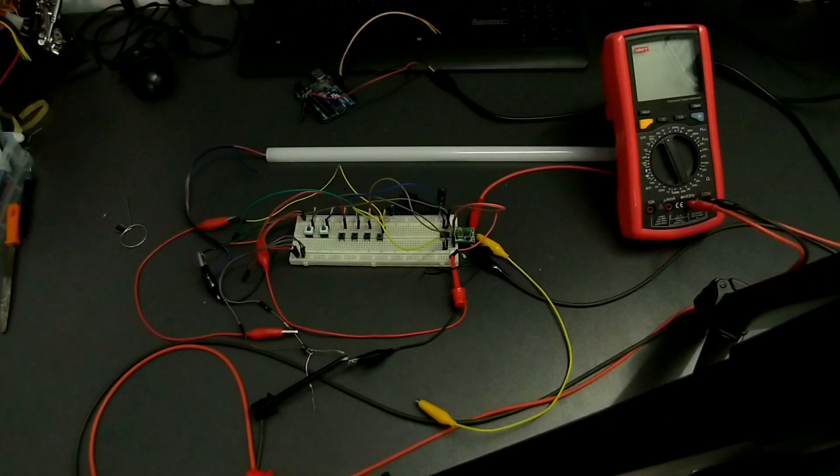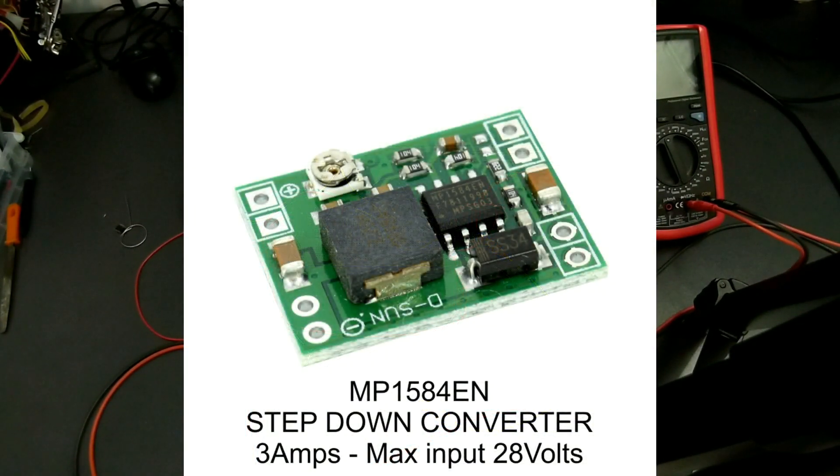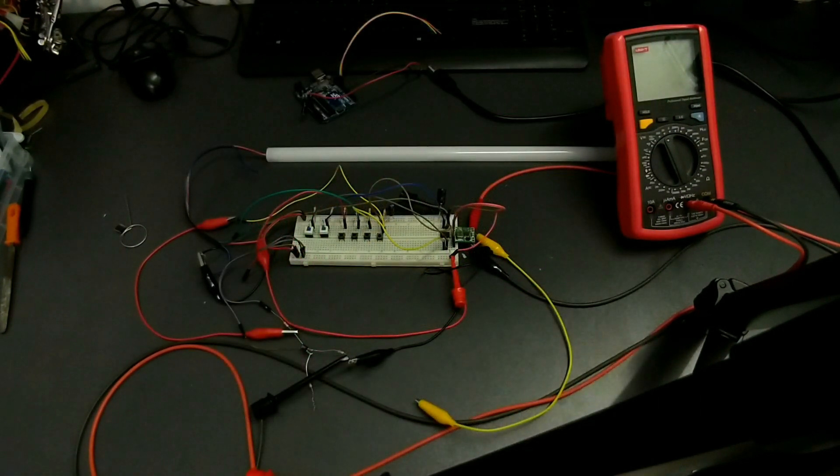I've also changed the step-down converter to a smaller and more efficient one that uses MP1584EN chip capable of delivering up to 3 amps, has a maximum input of 28 volts, and now with all the lights off the whole project draws about 20 milliamps.